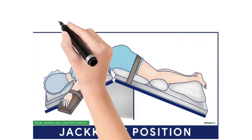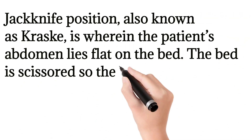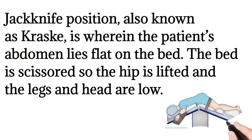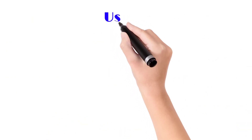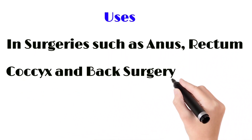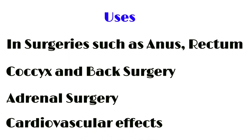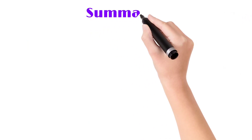Next is the jackknife position, also called the Kraske position — the patient's abdomen lies flat on the bed, the bed is scissored so the hips are lifted and legs and head are lowered, making the back and pelvic area clearly visible. Uses include surgeries of the anus, rectum, coccyx, back surgeries, and adrenal surgeries. There is also a cardiovascular effect due to pressure on the inferior vena cava.